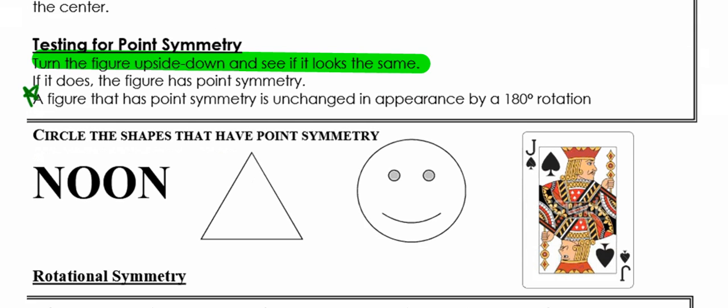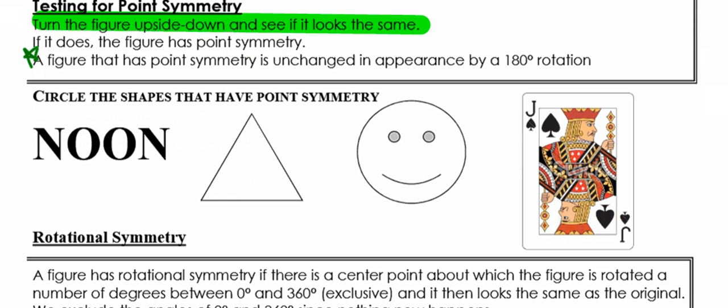Here in the middle of the page it says circle the shapes or words that have point symmetry. If you're doing this correctly at home, your paper is going to go back and forth — upside down, right side up. So I do want you to take a minute, pause the video, go flip it upside down and right side up. If they're the same upside down as they are right side up, they have point symmetry and you can circle them. Otherwise, just leave them alone.